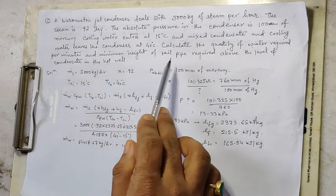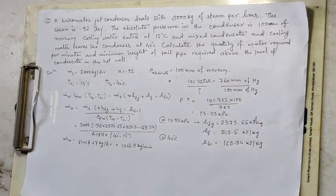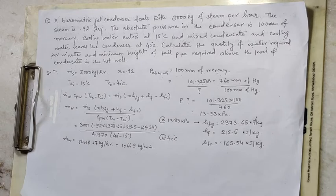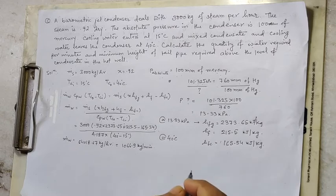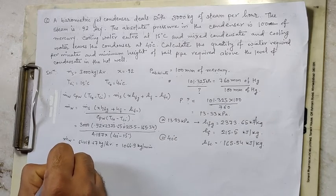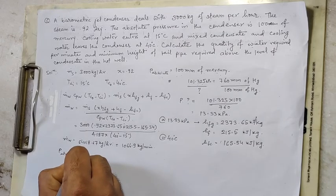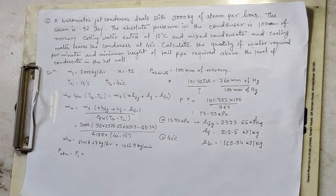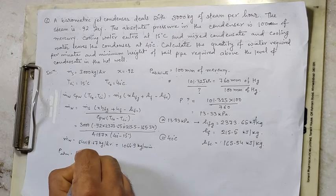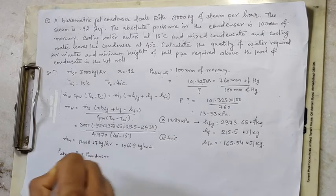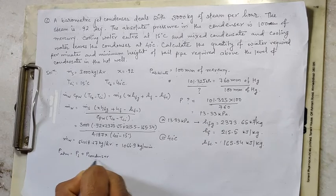Now for the minimum height of the tail pipe: the pressure in the hot well is atmospheric. That atmospheric pressure equals the sum of the pressure in the tail pipe (P1) and the condenser pressure. So: P_atm = P1 + P_condenser.